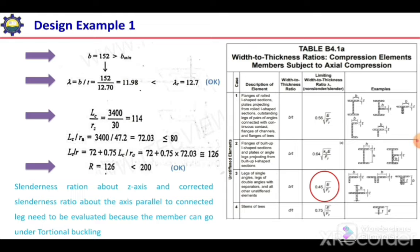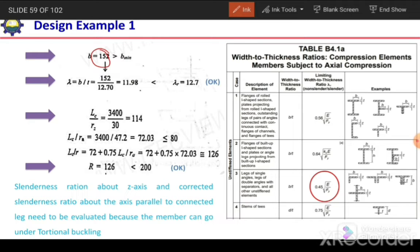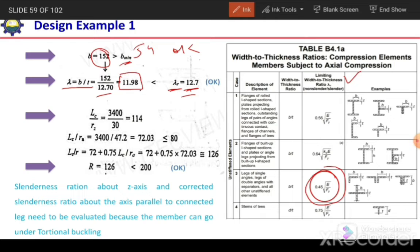Now we perform the checks. The first check is B > B_minimum. Our selected section has B = 152 mm, which is greater than 53.5 mm — this is satisfied. Next is the local instability check: B/T must be less than λr. For single angle legs under axial compression, λr = 0.45√(E/Fy) = 12.7. Our B/T = 152/12.7 = 11.98, which is less than 12.7, so the local instability check is satisfied.